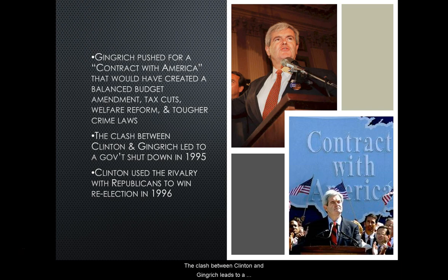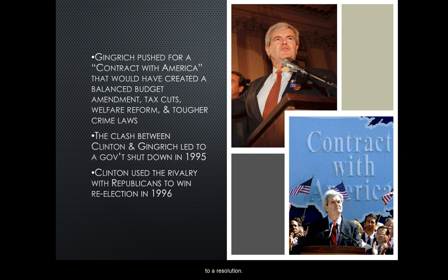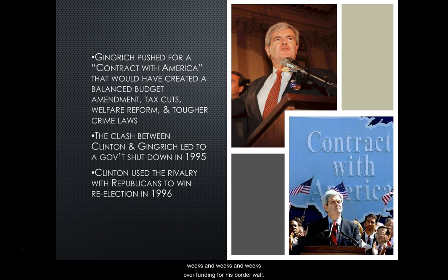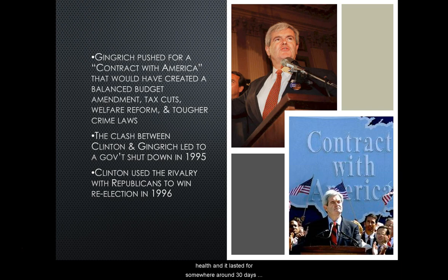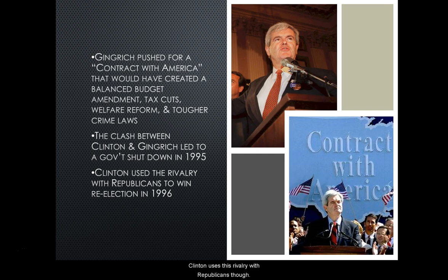The clash between Clinton and Gingrich leads to a government shutdown in 1995 — basically when all non-essential government agencies stop working and the government doesn't fund anything until they reach a resolution. The 1995 shutdown was over multiple things like funding for education, the environment, and public health, and it lasted around 30 days total across two separate shutdowns in November and in December–January of 1996. Clinton uses this rivalry with Republicans very tactfully to win re-election in 1996.